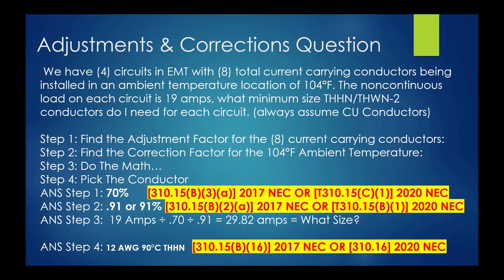So let's look at this question. We have four circuits — I'll assume these are two-wire circuits because it says a total of eight current-carrying conductors, so four circuits, two conductors each: one ungrounded and one grounded conductor. They're located in EMT, which is a tubing, not a conduit. Eight total current-carrying conductors installed in an ambient temperature location of 104 degrees Fahrenheit. The non-continuous load on each circuit is 19 amperes. The question asks: what is the minimum size THHN/THWN-2 conductor needed for each circuit?